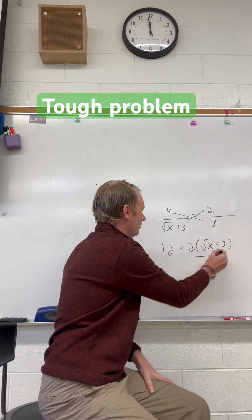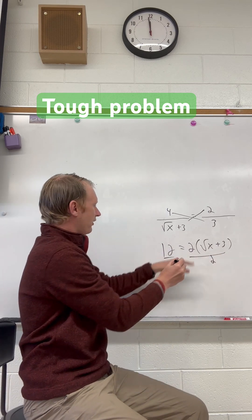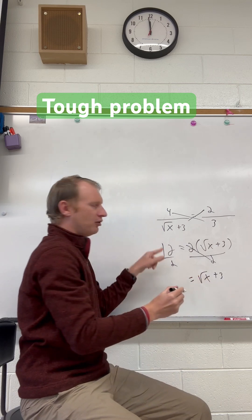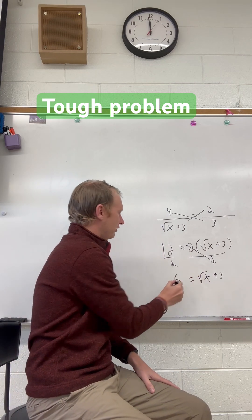We can actually divide both sides by 2 from here, and that'll cancel out the 2s, and then we get the square root of x plus 3 is equal to 12 divided by 2, which is 6.